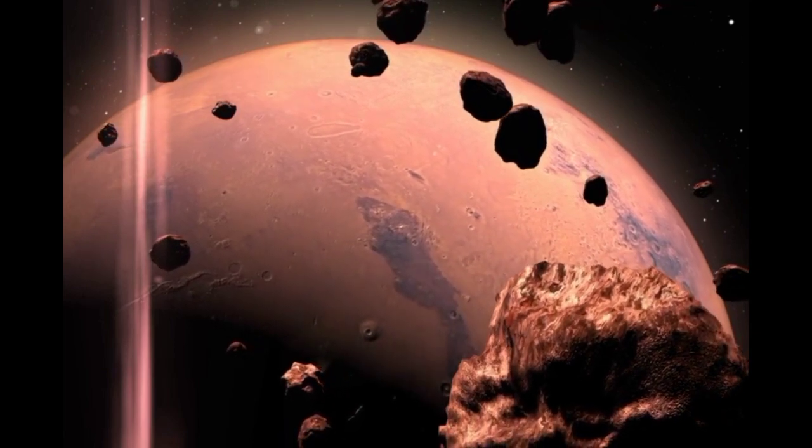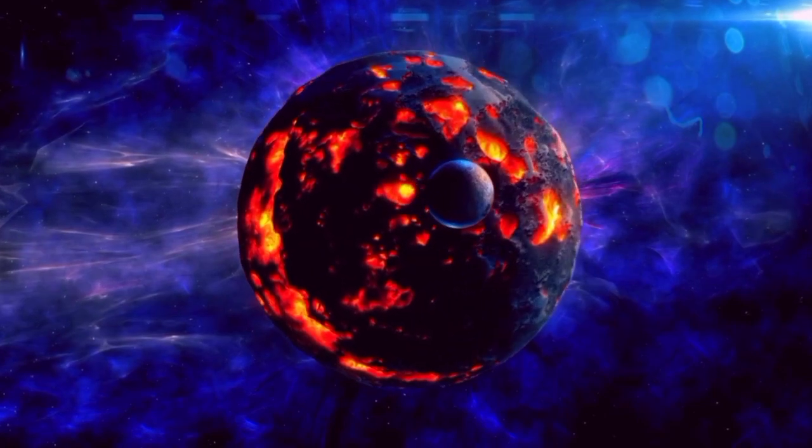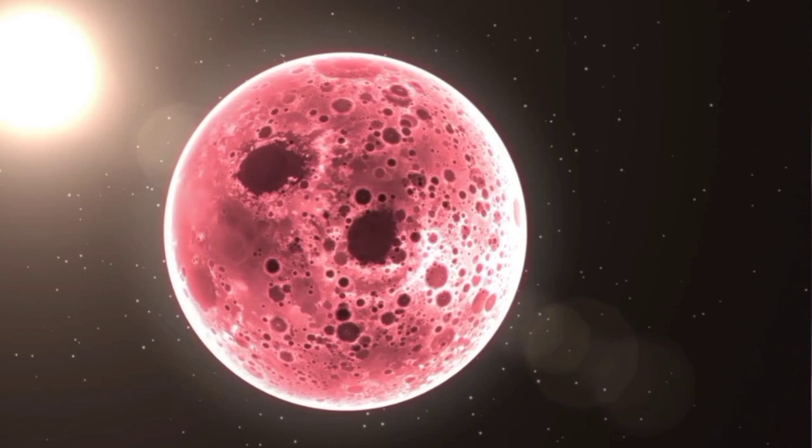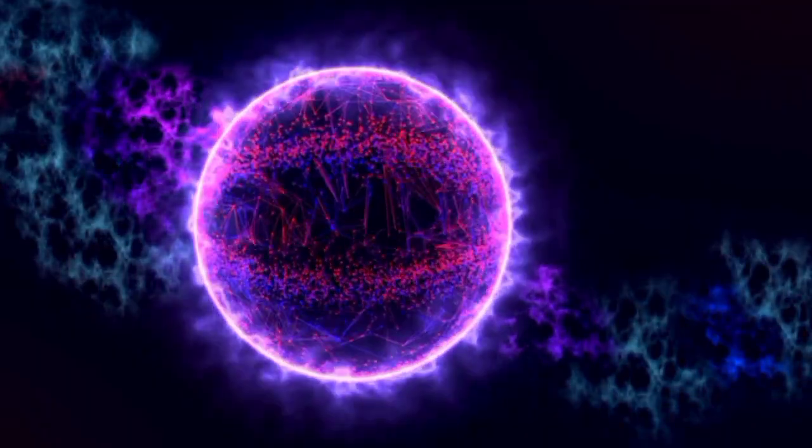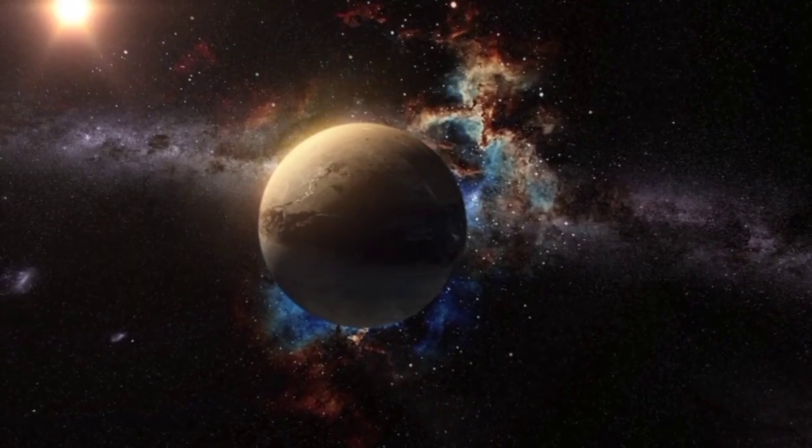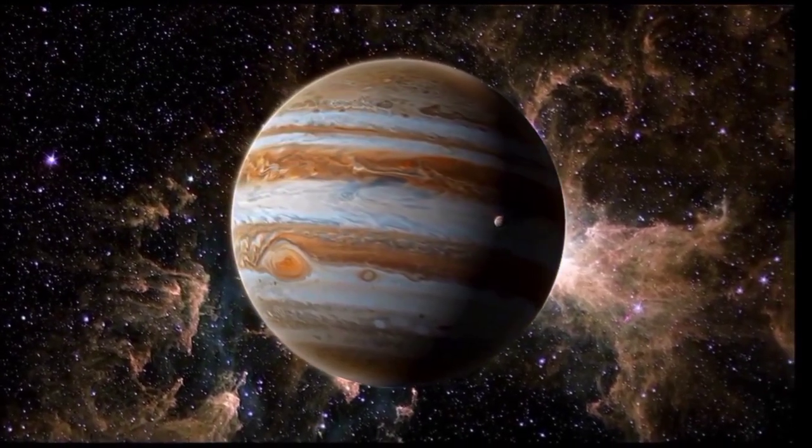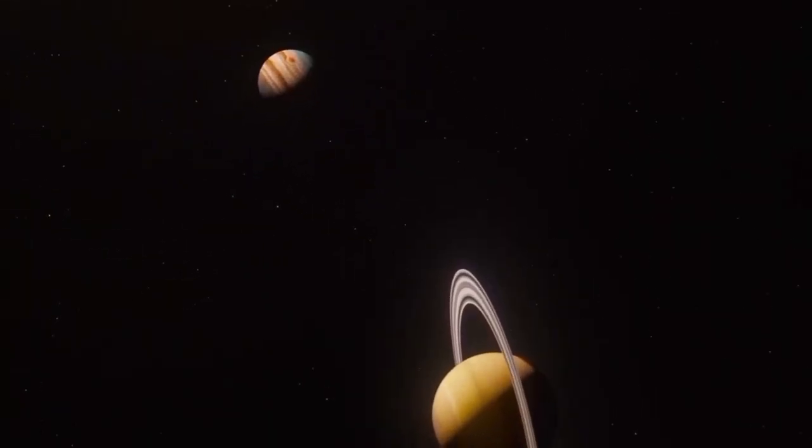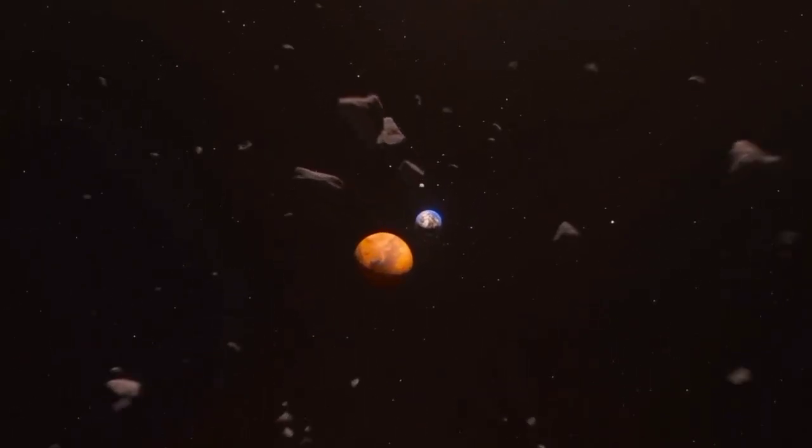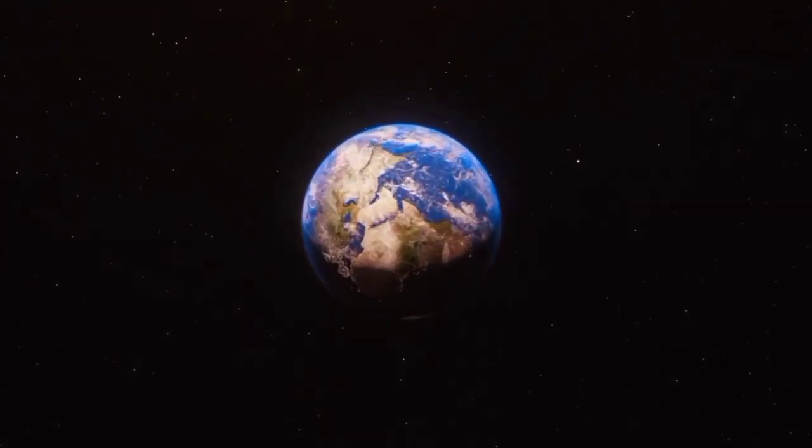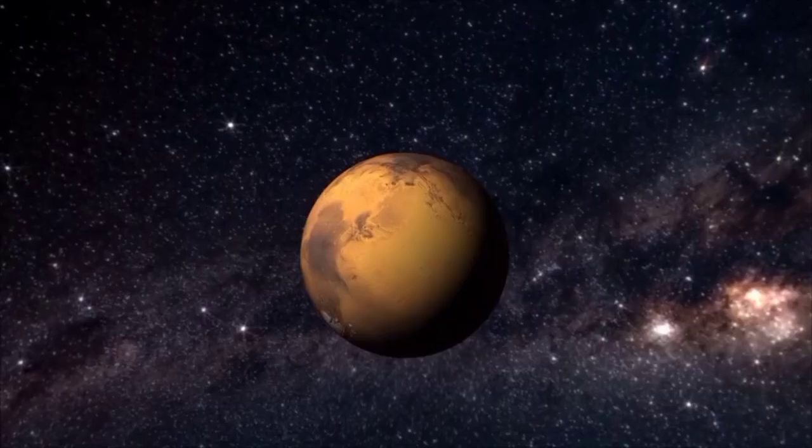Pluto, a former planet that was renamed a dwarf planet partly due to its eccentric orbit, remains a subject of interest and study in the astronomical community. Pluto's orbit is dangerously close to Neptune's. Pluto's journey around the Sun is unlike any other planet in our solar system. It takes a remarkable 248 years to complete one orbit, meaning that since its discovery in 1930, it hasn't even completed one full revolution. The fascination doesn't end there.